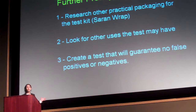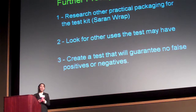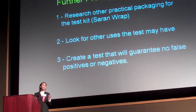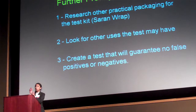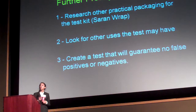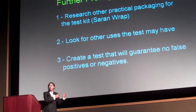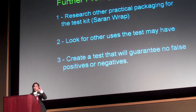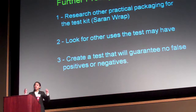This is a prototype of something I'd like to further develop in the future — researching other types of practical packaging for this test kit. Right now it resembles a litmus or dipstick test. Maybe I could make it like a saran wrap or embed it right in the plastic bags that our salads come in, making it a novel type of packaging. I'm also looking at other uses, such as applying this test in third world countries where E. coli and salmonella are constantly present in water. Additionally, I'm working toward creating a test that guarantees no false positives and no false negatives by embedding a positive control alongside the existing negative control.